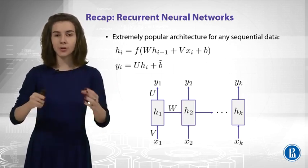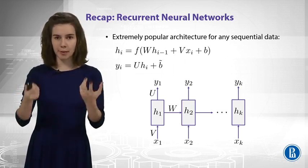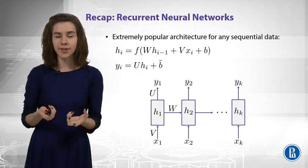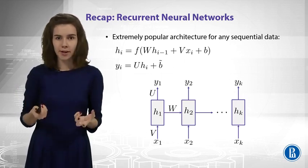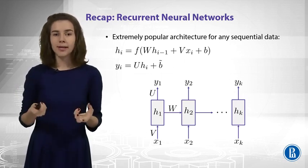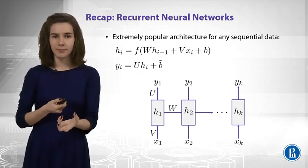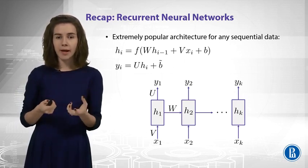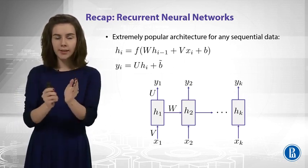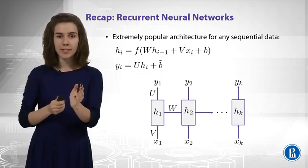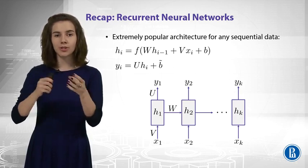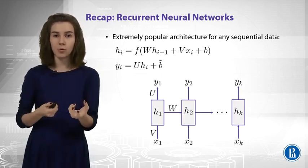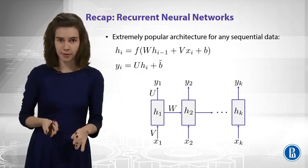Now, how do you output something from your network? Well, this is just a linear layer applied to your hidden state. You just multiply your hidden layer by a U-matrix, which transforms your hidden state to your output Y-vector.